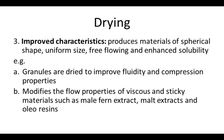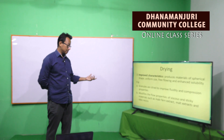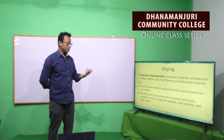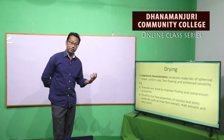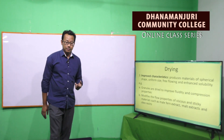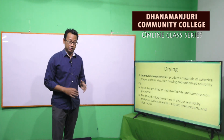The third importance is that drying improves the characteristics of solid substances. Drying produces materials of spherical shape, uniform size, and free flowing — that means the flowability of the particles increases after drying. For example, granules are dried to improve the fluidity and compression of tablets. It also modifies the flow properties of viscous and sticky materials, such as in the case of male fern extract, a plant extract.